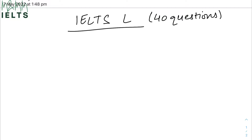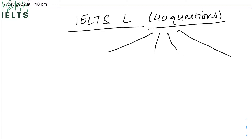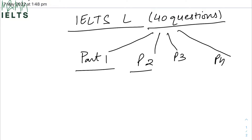These 40 questions are divided into four parts — earlier they used to call it sections, now they call it parts. So Part 1, Part 2, Part 3, and Part 4. Normally they are equally divided, which is 10 questions per part. Now, MCQs are not restricted to any one part — they can appear in Part 1, Part 2, Part 3, and Part 4 as well, and they can appear in more than one part.